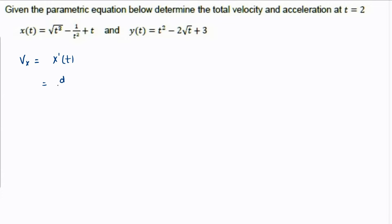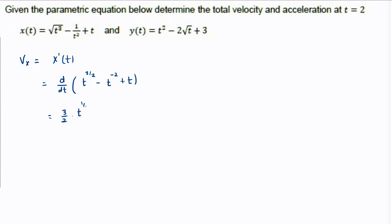We take d/dt of the x expression: cube square root of t is t raised to 3/2, 1 over t squared is t raised to minus 2, plus t. Differentiating gives 3/2 times t raised to 1/2, minus 2 comes down making t raised to minus 3, plus 1. So Vx = 3/2 times root t plus 2t raised to minus 3 plus 1.